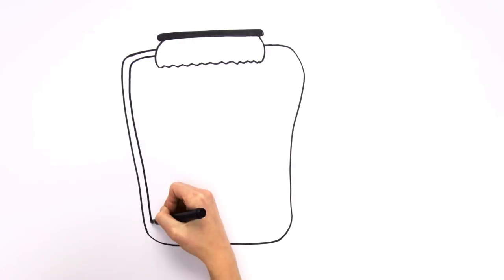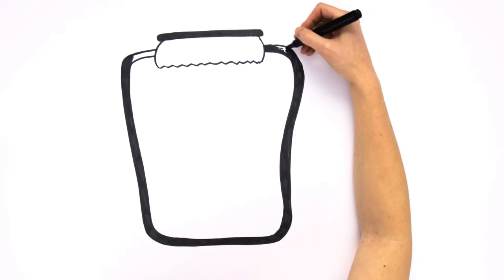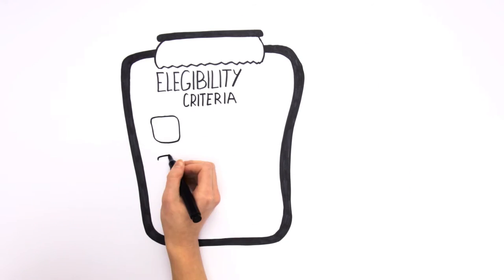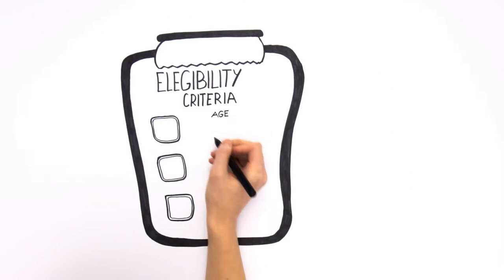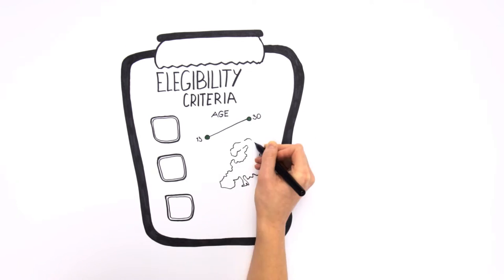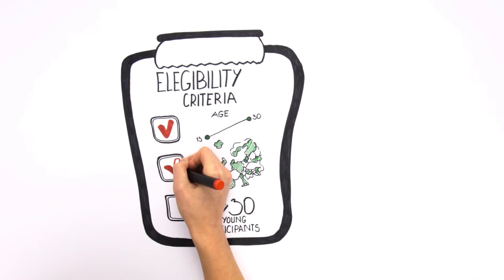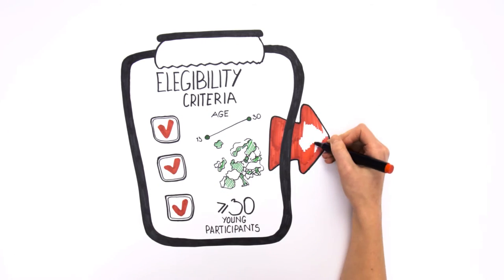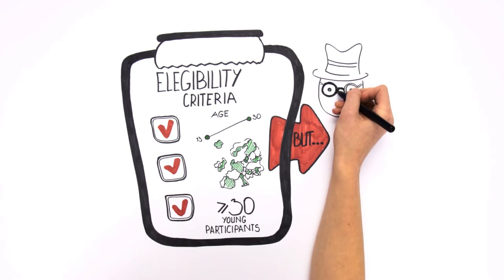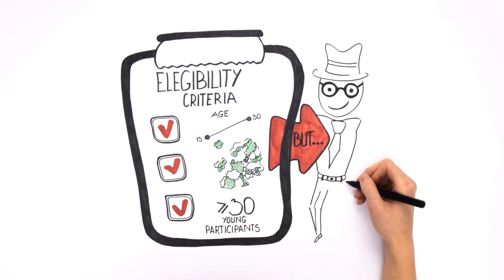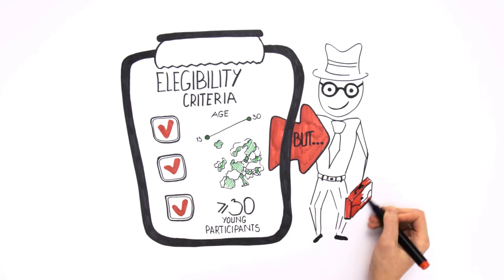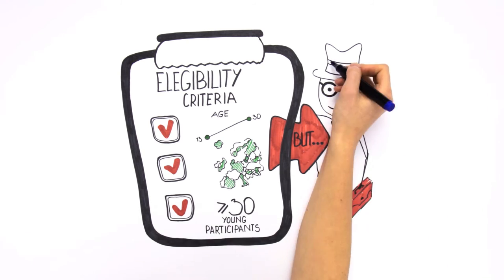There are certain eligibility criteria for participants wanting to attend such meetings. Young people should be aged between 13 and 30 and resident in one of the countries involved in the project. The project must involve a minimum of 30 young participants. If the project foresees the participation of decision makers or experts in the youth policy field, these participants can be involved regardless of their age or geographical place of origin.